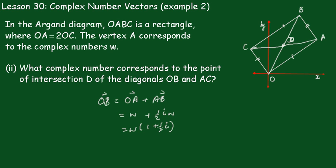OD is going to be a half of OB, because we know that the diagonals of a rectangle bisect each other. Therefore OD must equal a half of OB.